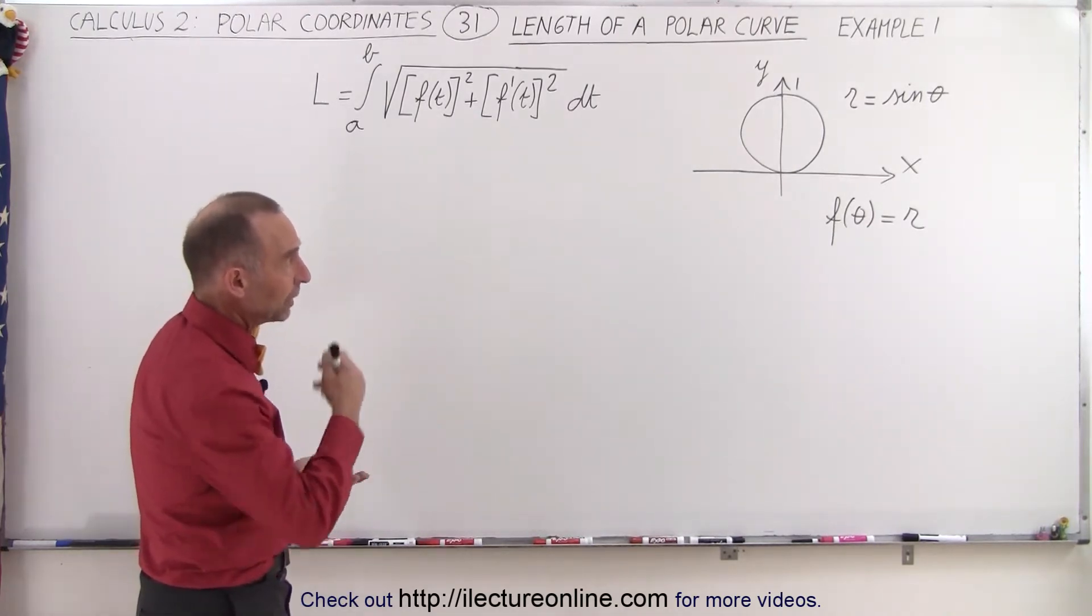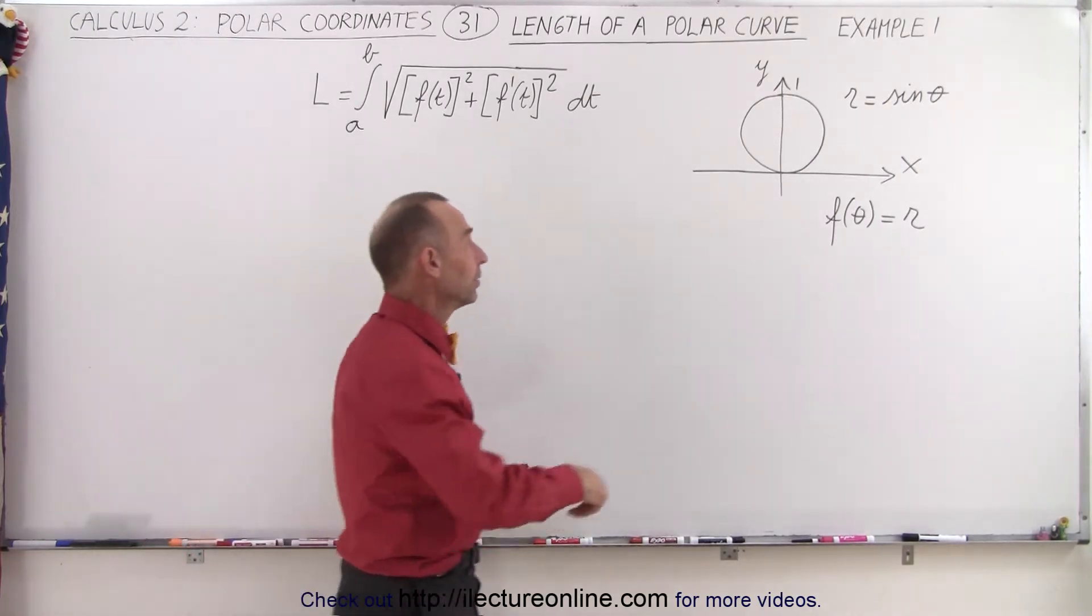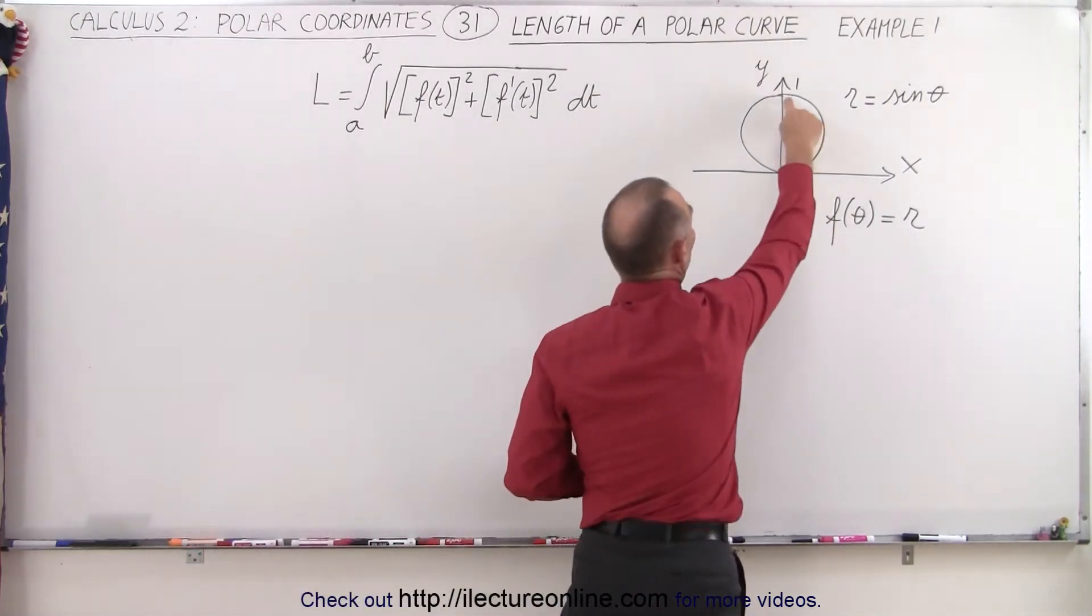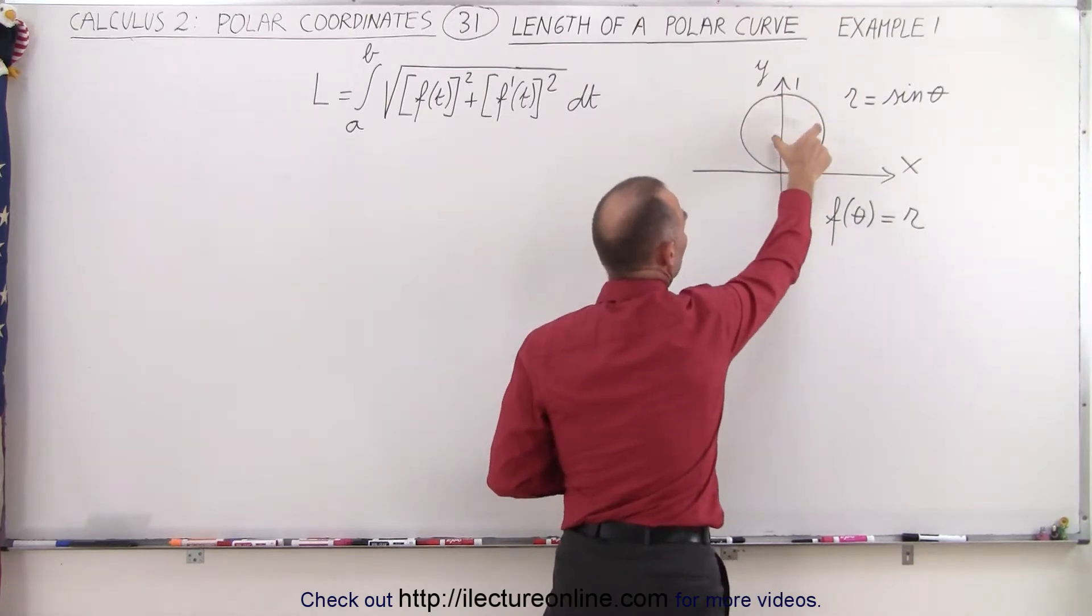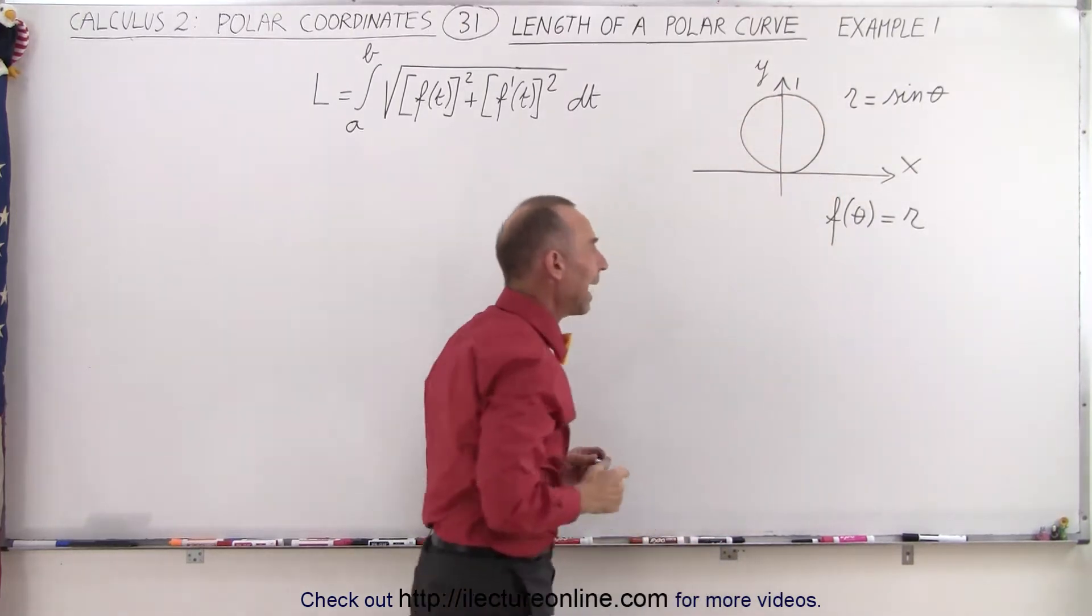The easy example: r equals sine of theta, which is simply a circle from the origin to the point on the y-axis equal to 1. So in other words, the radius of the circle is equal to 1 half.